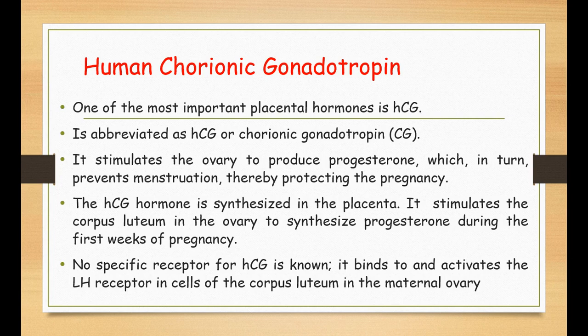HCG stimulates the corpus luteum to synthesize progesterone. By doing this, it prevents menstruation and allows the endometrium to grow, protecting the pregnancy and providing a good environment for the implanted zygote. HCG has no specific receptor of its own — it binds to the receptor for luteinizing hormone found on the corpus luteum, which allows the synthesis of progesterone and maintenance of pregnancy.